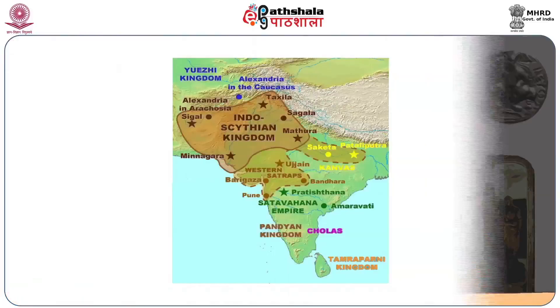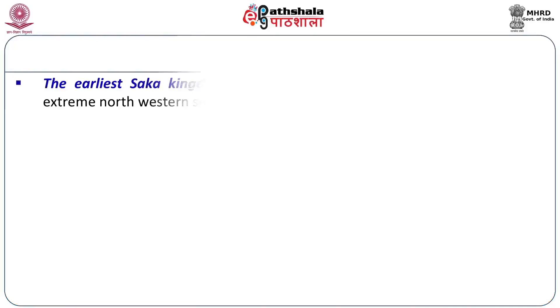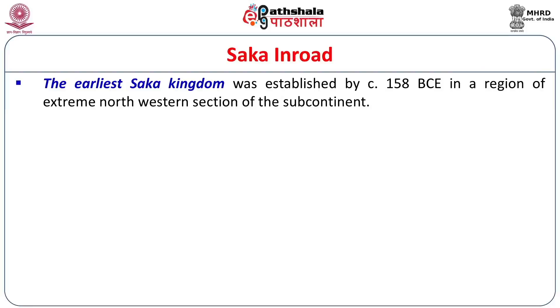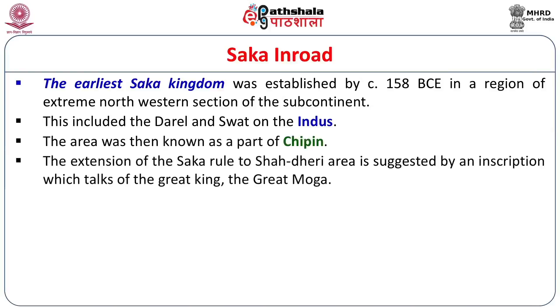Here you can see the map on which the territory of the Scythians is demarcated. The Scythians ruled in the regions of Taxila, where Mawas was centered, the region to the west and east of the Indus in Arachosia, and the Aegis group moved as far as Mathura. The earliest Shaka kingdom was established in 158 BCE in the extreme northwestern section of the subcontinent, including the Daryl valley and the Swad valley on the Indus. The area was then known as part of Chipin. The extension of the Shaka ruler to Shahdheri, the present Taxila region, is suggested by an inscription referring to the great king, the great Moga.